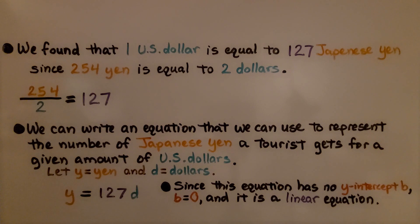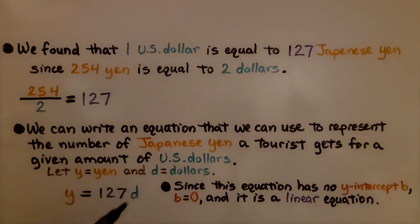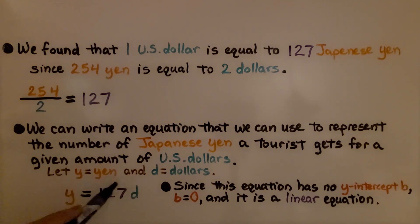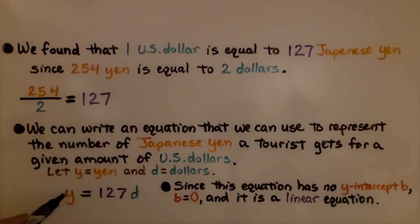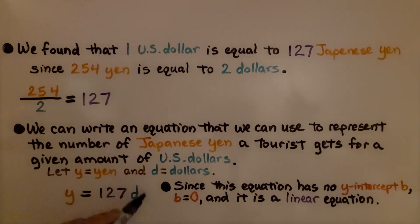We can write an equation to represent the number of Japanese yen a tourist gets for a given amount of U.S. dollars. We're going to let Y equal yen and D equal dollars. We have Y is equal to 127D. Depending on the number of dollars we trade will tell us the number of yen we have. Since this equation has no Y-intercept B, that means B is equal to 0, and it is a linear equation.